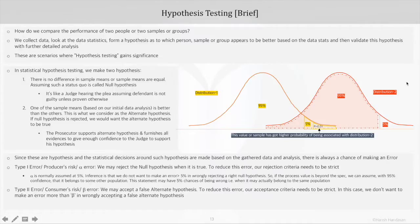Similar to Type 1 error, we also have Type 2 error, and this is when we accept a false alternate hypothesis. In a business scenario, it is like accepting a defective product or service and would obviously have a higher impact on the consumer, so it's also called consumer's risk. In this case, we don't want to make an error more than beta in wrongly accepting a false alternate hypothesis. And obviously, to reduce this error, our acceptance criteria needs to be stricter.